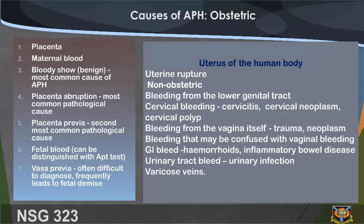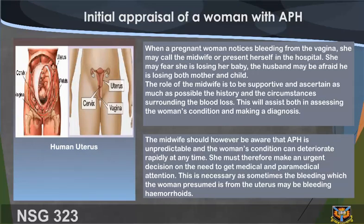Initial appraisal of a woman with APH: when a pregnant woman notices bleeding from the vagina, she may call the midwife or present herself at hospital. She may fear she is losing a baby; the husband may be afraid he is losing both mother and child. The role of the midwife is to be supportive and ascertain as much as possible the history and circumstances surrounding the blood loss. The midwife must be aware that APH is unpredictable and the woman's condition can deteriorate rapidly; an urgent decision on the need for medical attention is necessary.